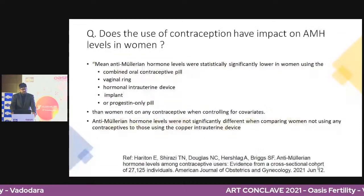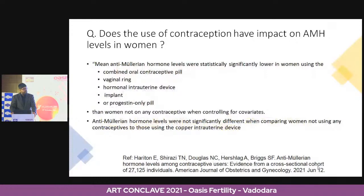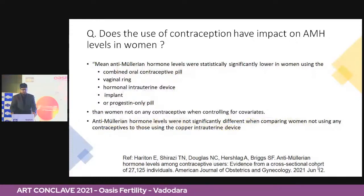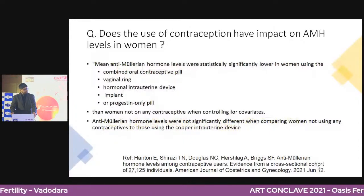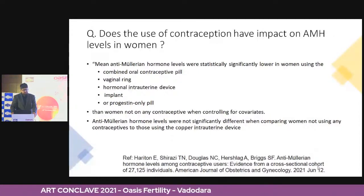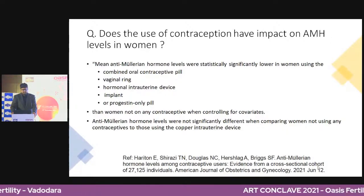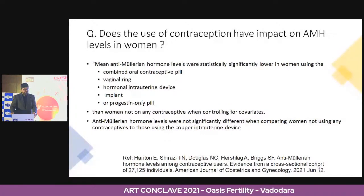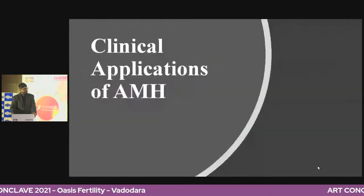Does the use of contraception have an impact on AMH levels? Studies have shown that hormonal contraception definitely does affect AMH levels. The use of combined OC pills, vaginal ring, and similar systems does impact AMH — levels tend to be lower in women using these contraceptive systems. Keep this in mind and interpret results in that practical context.